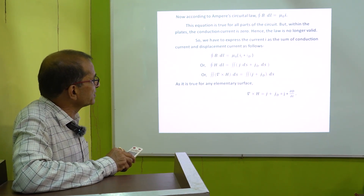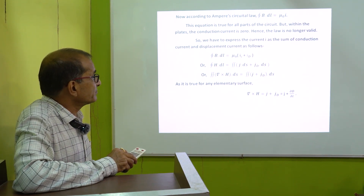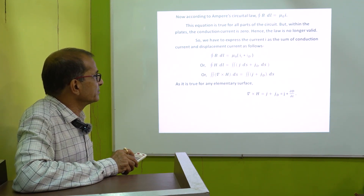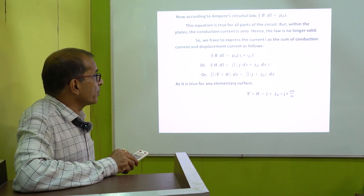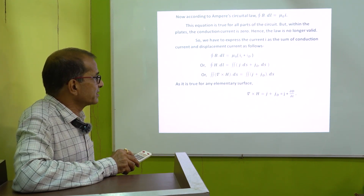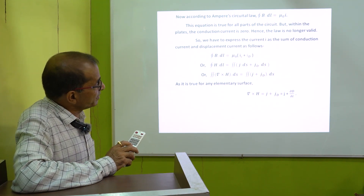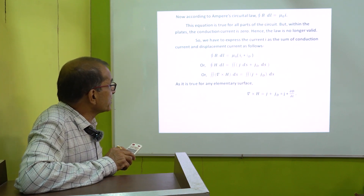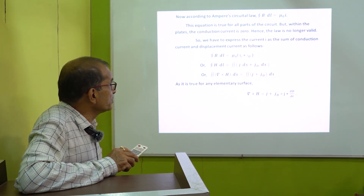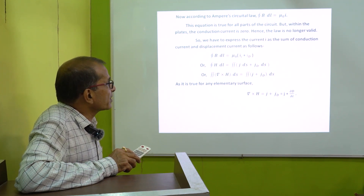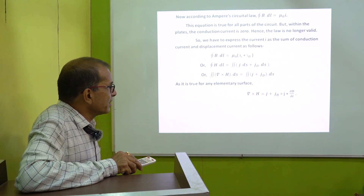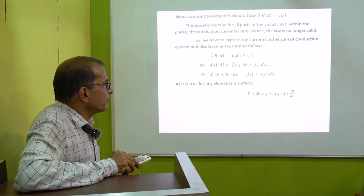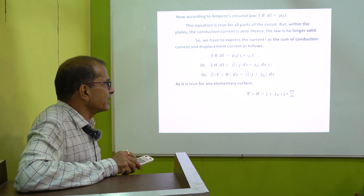We put B equal to μH, where μ is the magnetic permeability of the medium. Then we get the modified equation, where J is the conduction current density and Jd is the displacement current density. Curl of H — converting the cyclic integral to surface integral — as it is true for any elementary surface, curl of H equal to J plus Jd, and Jd equal to ∂D/∂t. This equation is applicable both for conduction current and displacement current individually and combined.